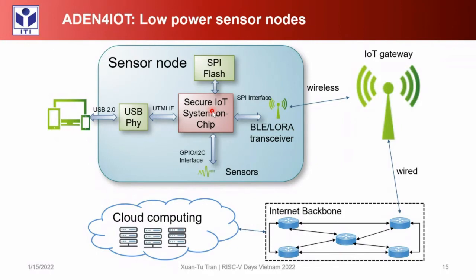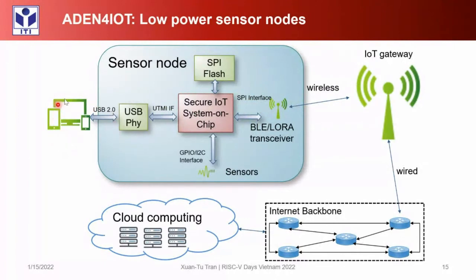The system can communicate with the PC through USB 2.0 and can communicate with other sensor nodes or gateways with Bluetooth Low Energy and LoRa standards. The system can interface with many sensors using GPIO, I2C, and SPI for flash or other devices. This node can be configured by a program on PC, and then it can operate independently and communicate with the IoT gateway. The information collected by the sensor node and IoT gateway is transferred to the internet and pushed to a server on cloud computing.